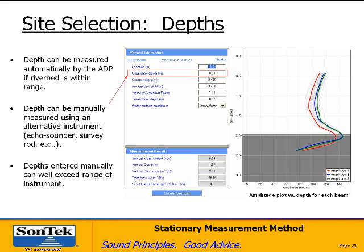Now let's talk about depths. Typically you can use the depth measured from the bottom track using the ADP, which is displayed automatically. If you have an alternative source for depth measurement — such as an echo sounder, survey rod, or other device — you can override the bottom track depth and enter your own value. You may do this with high sediment loads where it's difficult to identify the bottom, or with lots of vegetation growth. This also lets you make velocity measurements at depths greater than the range of the system itself.